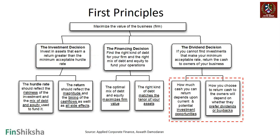Going back to first principles: if you cannot find investments where you're going to make a minimum acceptable rate, then the money needs to be returned to your stockholders or investors. How much cash you can return depends upon current and potential investment opportunities. Dividend becomes an important mechanism, and stakeholders may prefer either a dividend, a buyback, or other modes of receiving cash depending on a variety of factors.